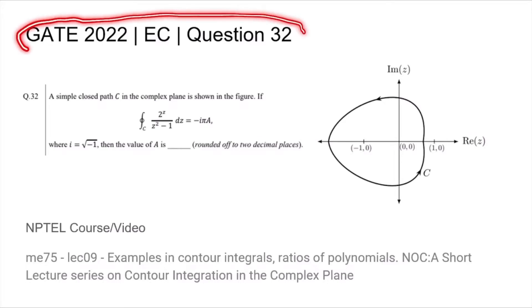This is Question 32 from the GATE 2022 EC paper. We are given a closed loop path in the complex plane in the anti-clockwise direction, enclosing points (-1, 0) and (0, 0). We are asked to find for what value of a this equation is satisfied.